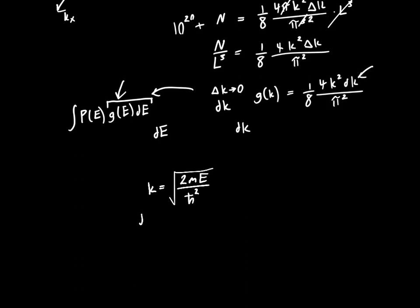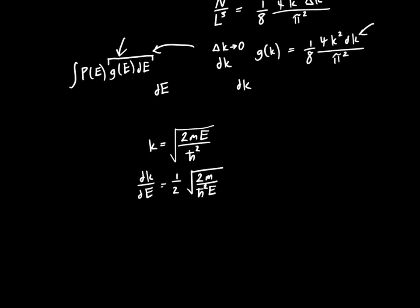Or dk/dE is just... Well, it's the derivative with respect to the square root of e, or one half times the square root of 2m over h-bar squared e. Or if we solve for dk, just multiply both sides by dE, one half square root of 2m divided by h-bar squared, one over e, times dE.